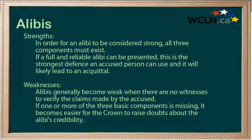In order for an alibi to be considered strong, all three components must exist. If a full and reliable alibi can be presented, this is the strongest defense an accused person can use and it will likely lead to an acquittal. Alibis generally become weak when there are no witnesses to verify the claims made by the accused. If one or more of the three basic components is missing, it becomes easier for the Crown to raise doubts about the alibi's credibility.